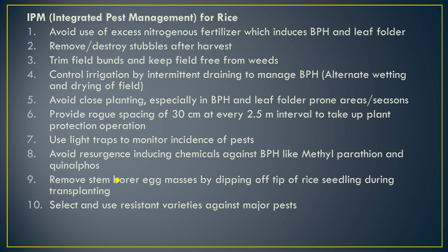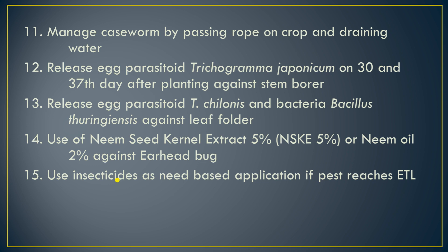Select and use resistance varieties against major pests, such as Mahamaya, Indira, IR36, MTU1010, etc. Manage caseworm by passing rope over crop and draining water. Release egg parasitoid Trichogramma japonicum on the 30th and 37th days after transplanting. Release egg parasitoids like Trichogramma chelonis and bacteria like Bacillus thuringiensis against leaf folder. Use neem seed kernel extract 5% (NSKE 5%) or neem oil 2% against ear-head bugs.